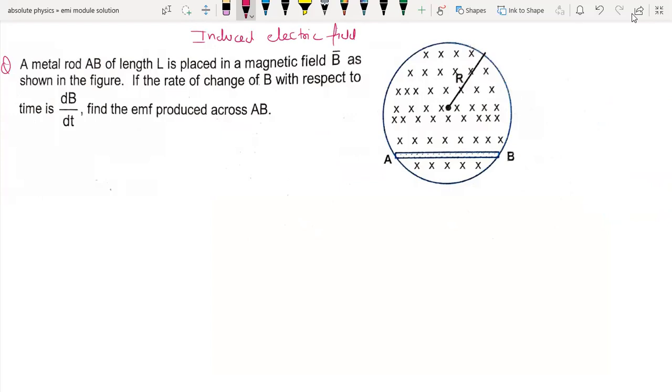A metal rod AB of length L is placed in a magnetic field as shown in the figure. If the rate of change of field is dB by dt, find the EMF induced across AB.